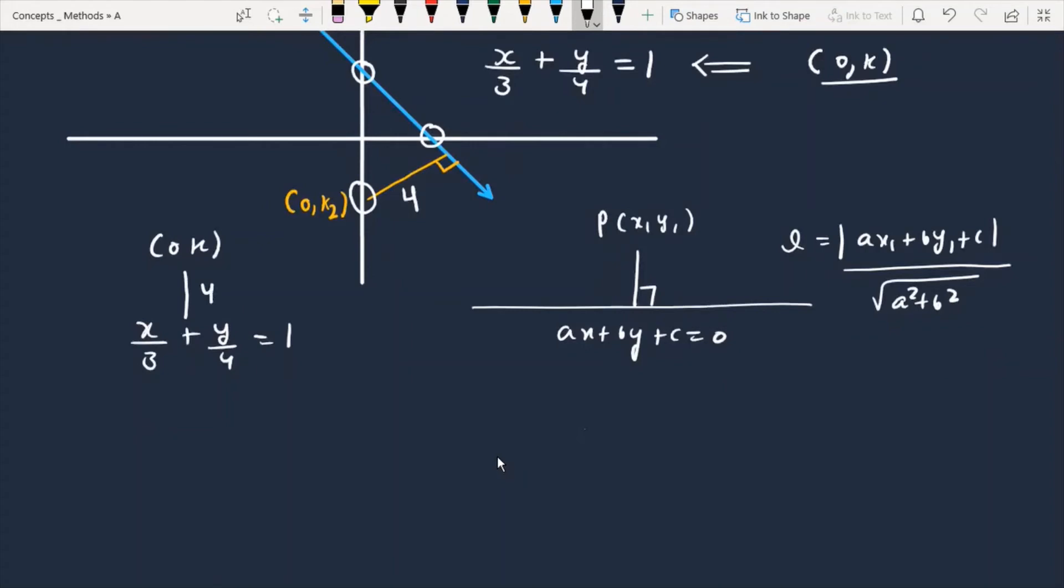This is actually 4 units, so if I apply this formula here it will be |0 + k/4 - 1| divided by sqrt(1/9 + 1/16). Okay, now further simplify this data.